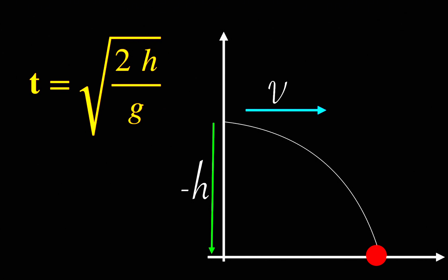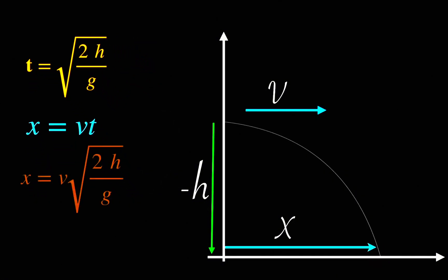Now, we have the time. We can use it to find the horizontal distance the object covers. Let's use the equation, distance covered equals velocity times time. Let's substitute the value of time from the equation above, and we get x equals v times root 2h over g.